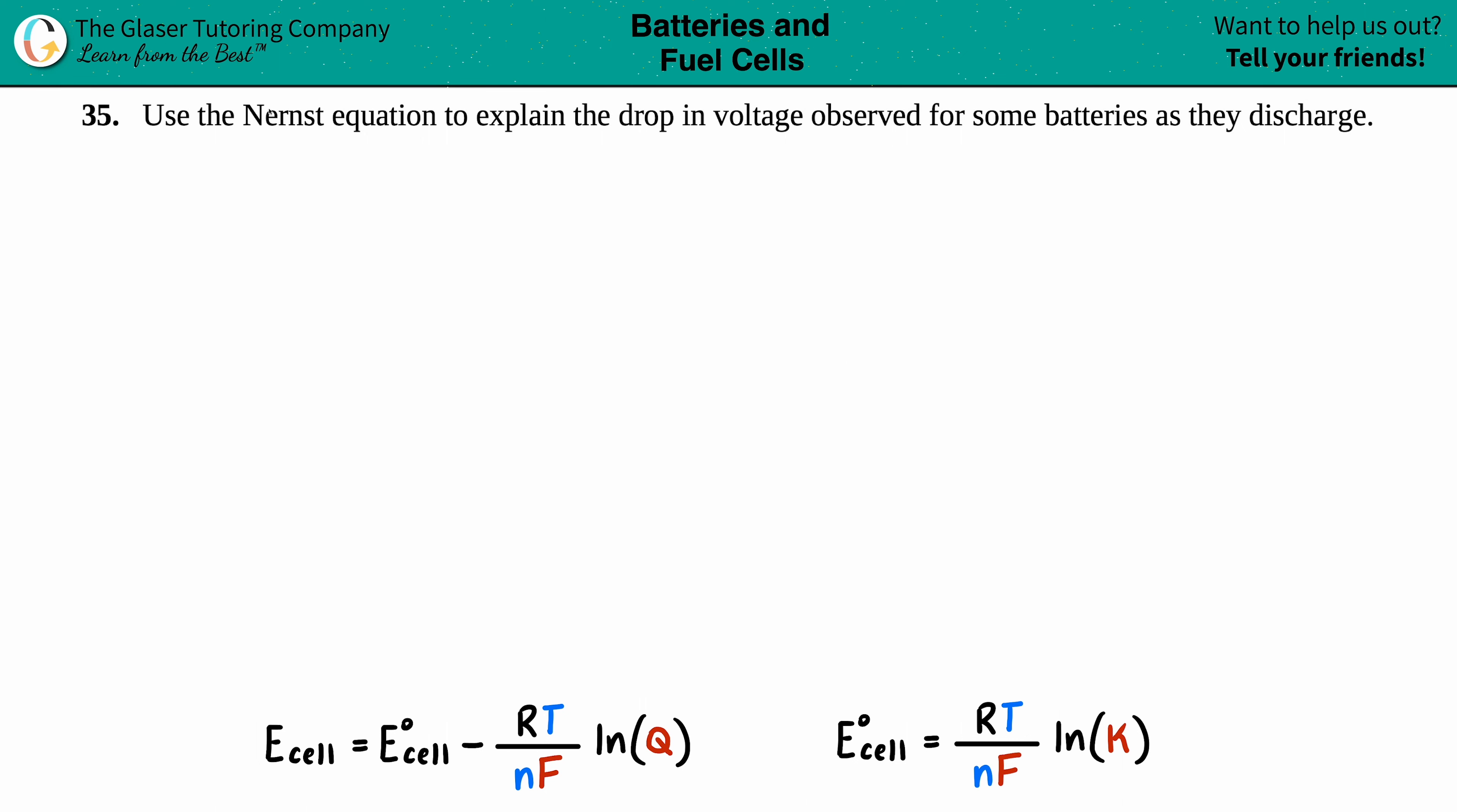Number 35: Use the Nernst equation to explain the drop in voltage observed for some batteries as they discharge.